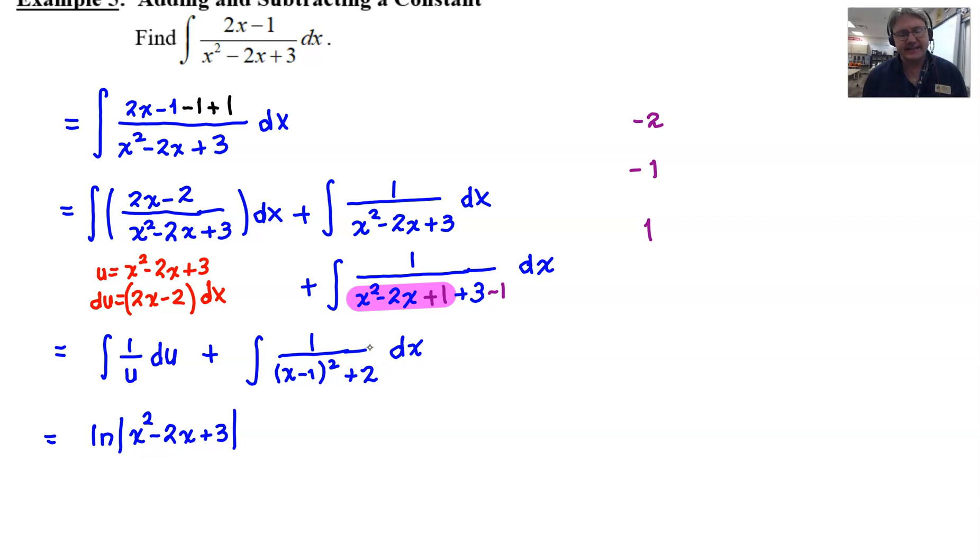You would need to recognize this as an arc tangent form. We know here that the u squared is just x minus 1 squared. The a squared is 2. So that forces u to be x minus 1. And a is going to be the square root of 2. And of course, the derivative of the u is just 1. So du and dx are interchangeable.